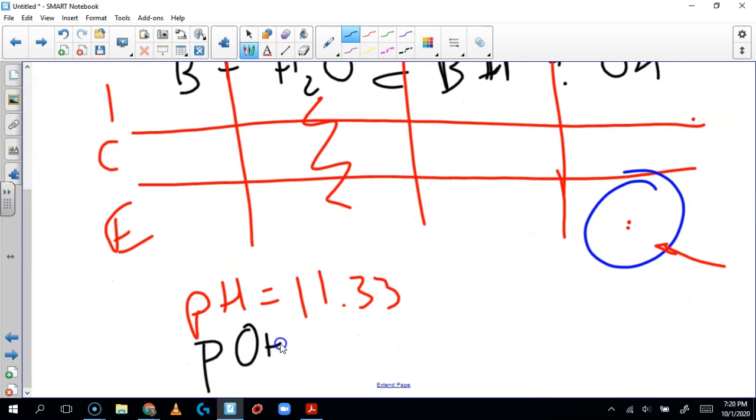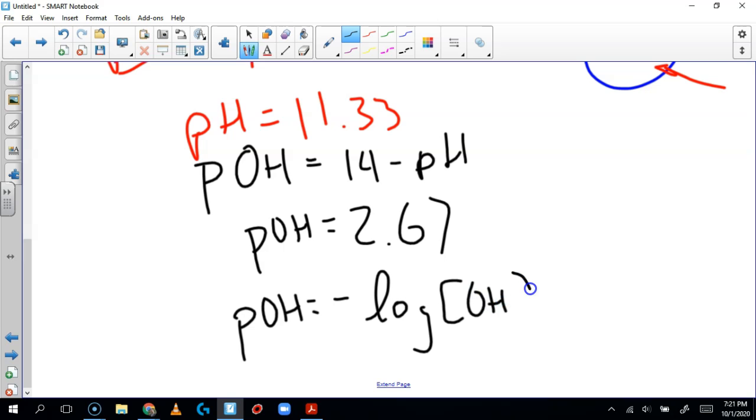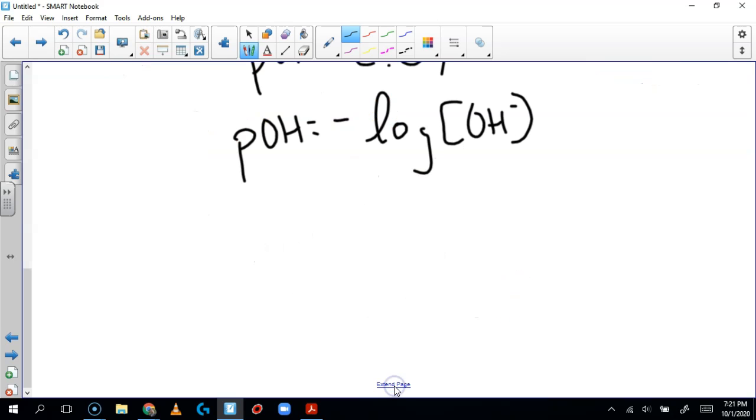So what is the equilibrium concentration of the hydroxide ion? Well we know that the pOH is 14 minus pH. So that means that the pOH is equal to 2.67. So now we can use the pOH formula. pOH equals the negative log of the concentration of the hydroxide ion to get us what the concentration of the hydroxide ion.